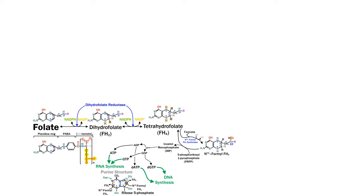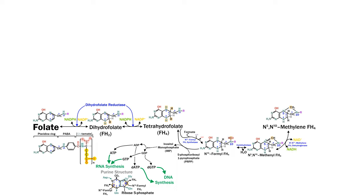Folate can also be converted to an intermediate methanol form, and you can see there's a bridge between the N5 and N10. This can be further reduced to methylene, which is the same structure with an additional hydrogen and only a single bond. This is an extremely important molecule that we'll come back to shortly, although so far we've only discussed single carbons coming from formate.